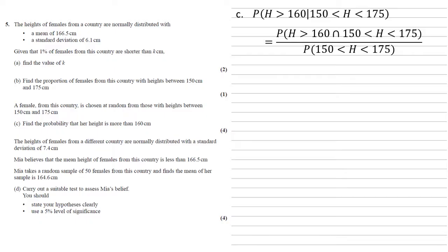Looking at the numerator of this fraction, if we've got the intersect of H being larger than 160 and between 150 and 175, well, this means that H must be between 160 and 175. We can now work out both of these on our calculator. First one by using the lower bound of 160 and upper bound of 175. Bottom one, the lower bound of 150, upper bound of 175. Along with our mean and standard deviation as given in the question, we'll end up with 0.7749 over 0.9148 that we found in part B, which gives us an answer of 0.847.